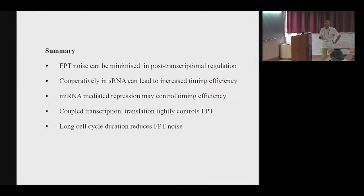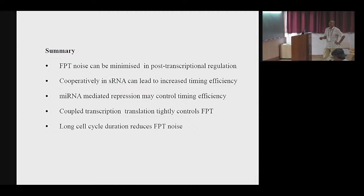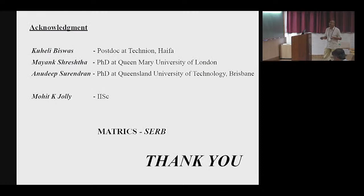To summarize: FPT noise can be minimized by post-transcriptional regulation. Cooperativity in sRNA — whether two or more sRNAs are in play — can increase timing efficiency without increasing transcription cost. MicroRNA-mediated repression can also control timing efficiency. Coupled transcription-translation, i.e., constrained transcription-translation, also tightly constrains first passage time — though we have only numerical evidence so far. Long cell cycle duration also reduces first passage time noise. Most of this work was done with Kuhili, now at Technion, and the translation model was introduced by Mohit Jali. Thank you.